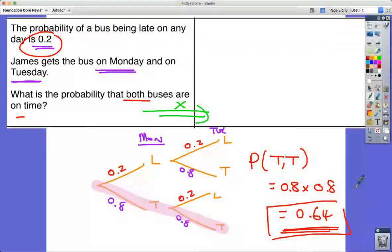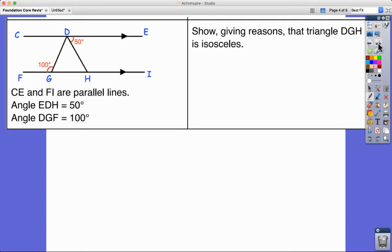Let's look at this one, another good question. Often you get a diagram and what's underneath will basically explain what's in the diagram. What I can see here is CE, this line here, and FI are parallel lines. I can see that from the arrows. I can also see the angle EDH is 50 and DGF is 100. So all I have to do is just look at this and it's explained underneath. Some people might think that's unnecessary but it's just making extra clear.